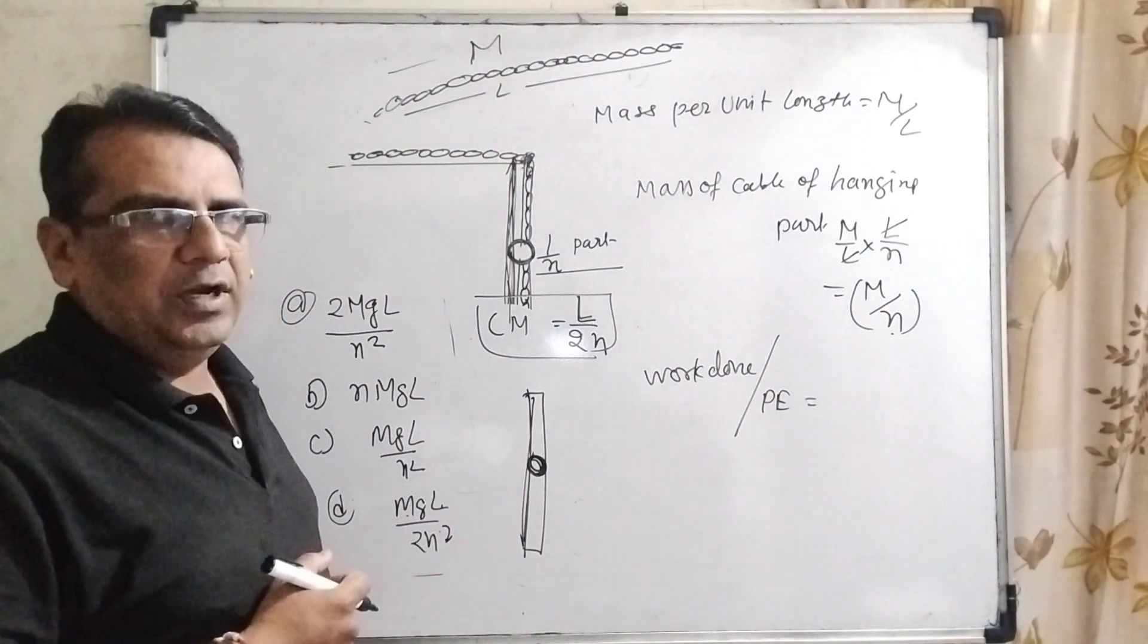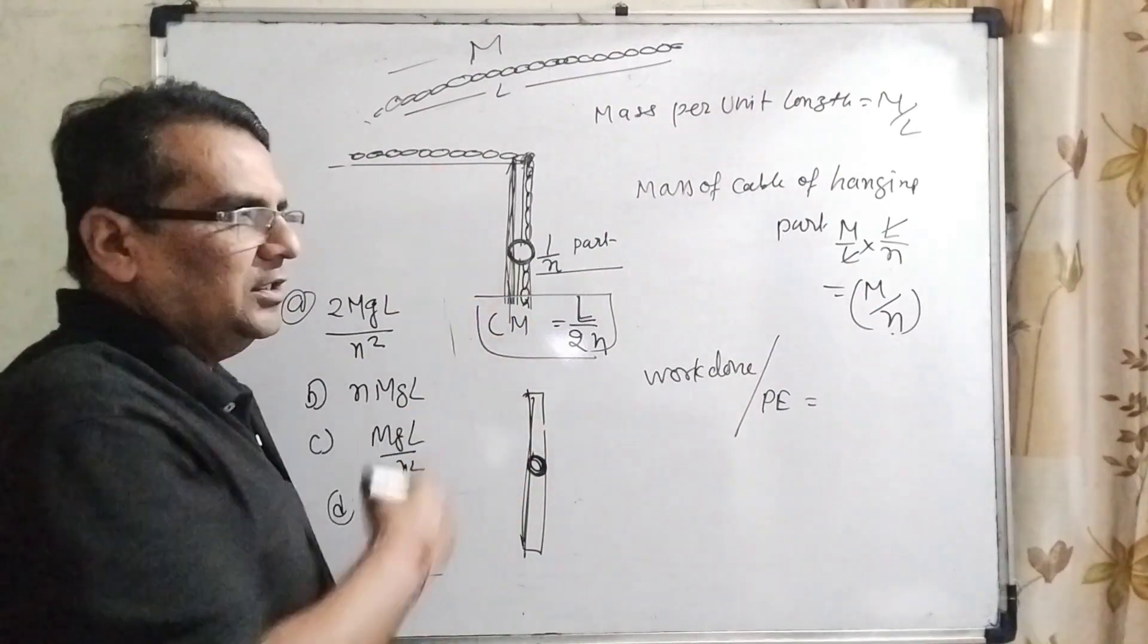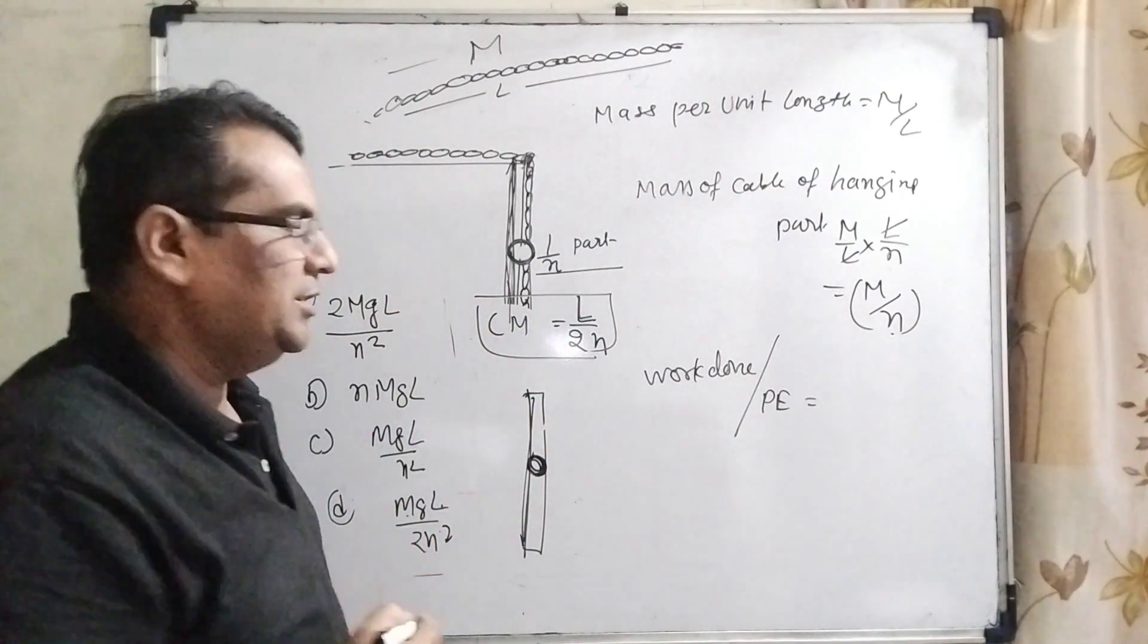What does work-energy theorem say? Amount of work done here is change in energy. Here total energy is change in potential energy.